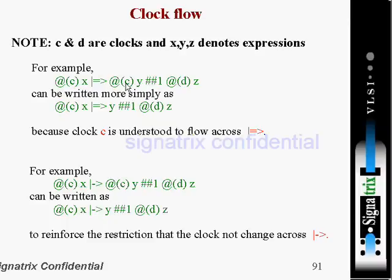After that, at the passage of this clock — the same clock — Y should occur. Then one clock cycle later, we are expecting another clock edge, another clock event, then Z, right? This is clock flow.